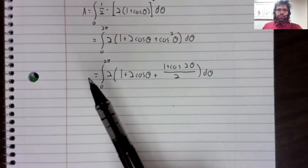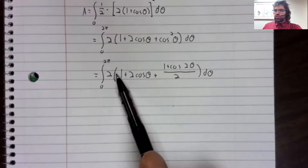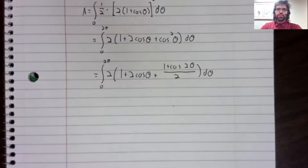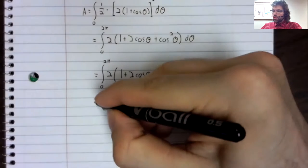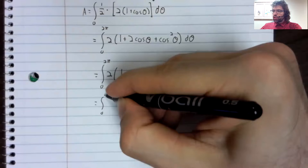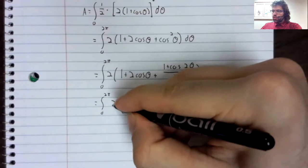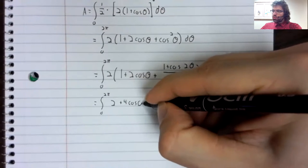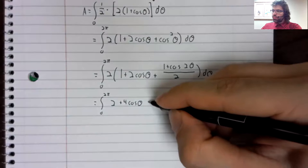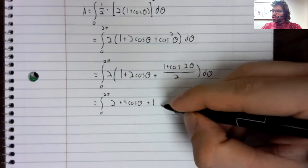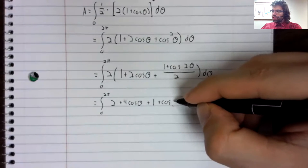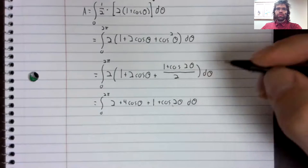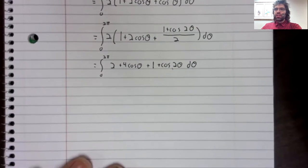Now, we multiply this two through. We get the integral from zero to two pi. Two plus four times the cosine of theta plus one plus the cosine of two theta d theta.